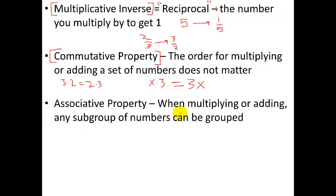Lastly, the associative property. If you multiply or add, any subgroup of numbers can be grouped. For example, 1 plus 2 plus 3. You could put parentheses and add the 1 and the 2 first and then the 3, or you could subgroup the 2 and the 3 first.